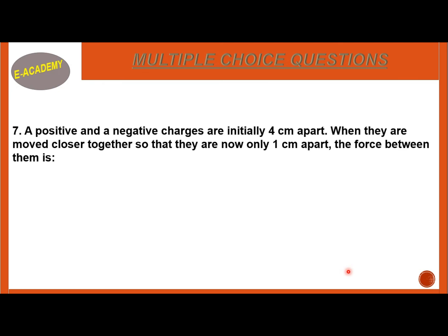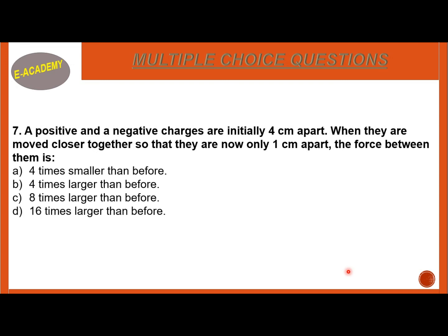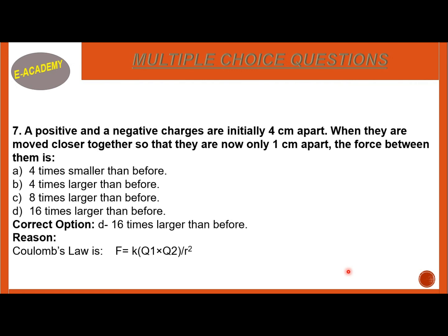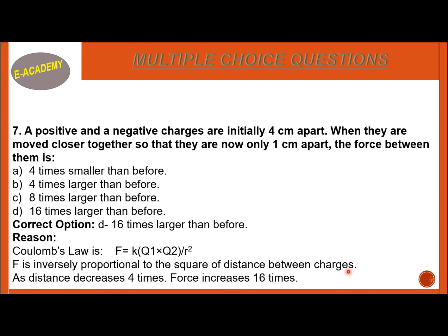MCQ Number 7: Positive and negative charges are initially 4 cm apart. When they are moved closer together so that they are now only 1 cm apart, the force between them is — 4 times smaller than before, 4 times larger than before, 8 times larger than before, or 16 times larger than before? The distance decreases 4 times, so the force is 16 times larger than before. The correct option is D, 16 times larger. Reason: By Coulomb's law F = KQ1Q2/R², F is inversely proportional to the square of the distance. As distance decreases 4 times, force increases 16 times.